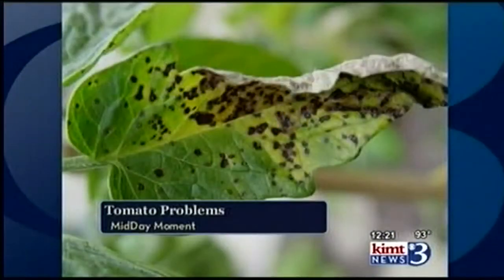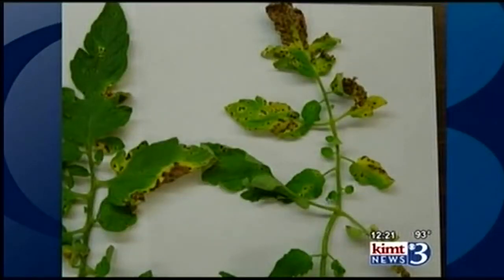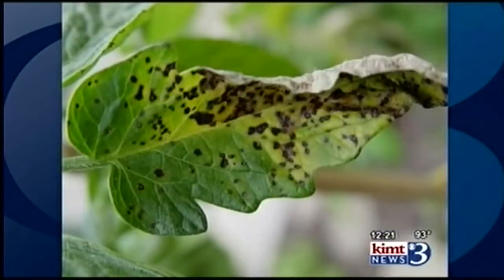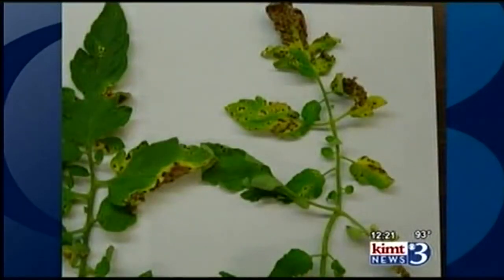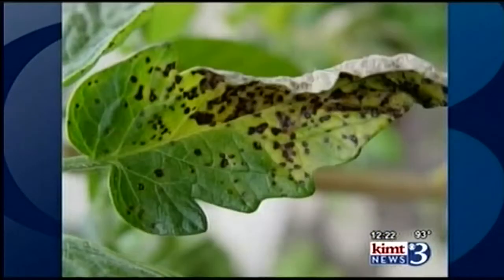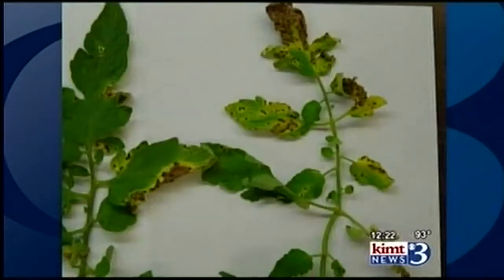With the spring weather we've had — cool and wet, and now very warm temperatures and humidity — weather-related issues can develop. Septoria leaf spot is one of the most common disorders tomatoes end up having. It starts on the lower leaves as small circular spots and eventually overtakes and destroys the leaf, moving up the plant as well, as we're seeing right now in those photos.